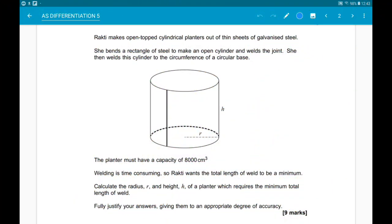Okay then, first up. Rakki makes cylindrical planters out of thin sheets of galvanized steel. She bends a rectangle of steel to make an open cylinder and welds the joint, then welds the cylinder to the circumference of a circular base. The capacity of the planter must be 8000 cm cubed, so that's the volume.